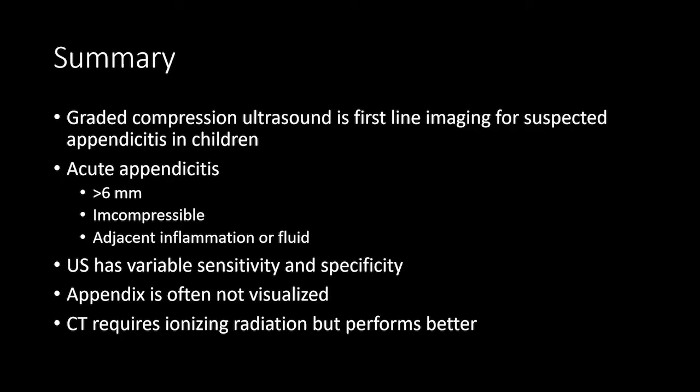In summary, we use graded compression ultrasound as first-line imaging for suspected appendicitis in children, and in some cases for pregnant women, although MRI is increasingly taking over that role. Acute appendicitis can be diagnosed by an appendix greater than 6 millimeters that is incompressible with adjacent inflammation or fluid. Ultrasound has variable sensitivity and specificity due to inter-user variability and the need for a highly skilled operator. Unfortunately, in a large number of cases the appendix will not be visualized due to overlying bowel or a retrocecal or abnormally positioned appendix, requiring clinical judgment about whether CT is necessary for additional characterization.